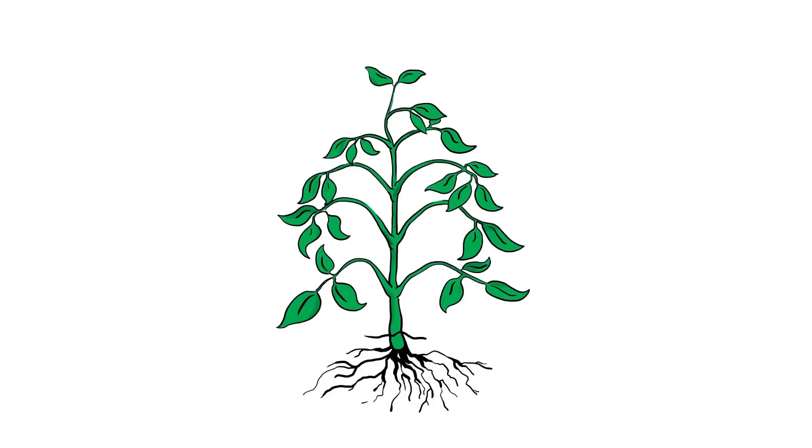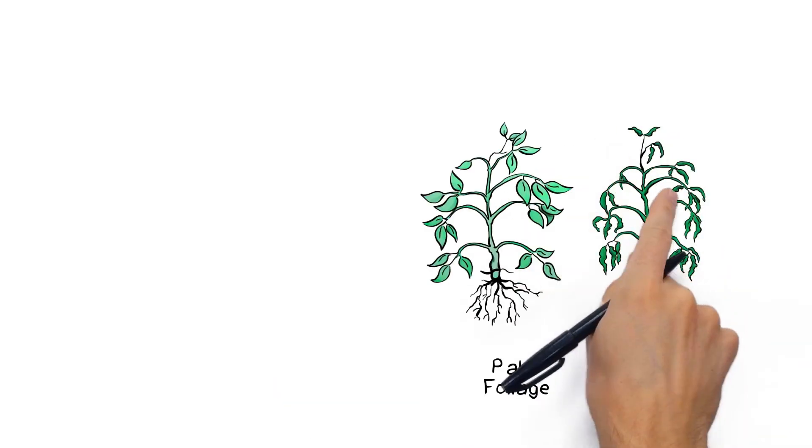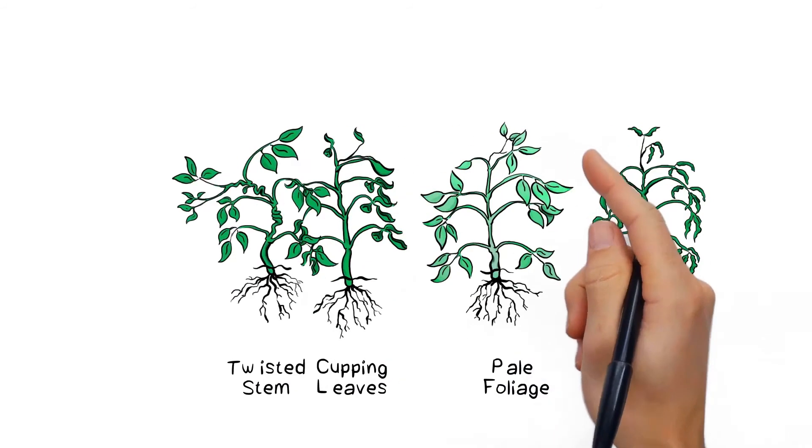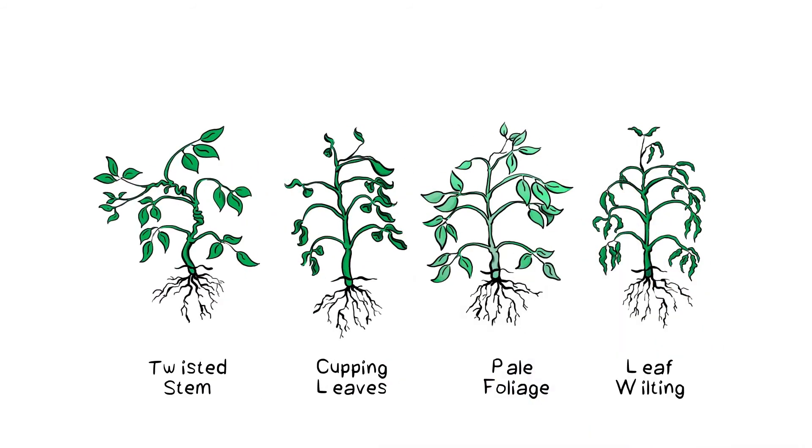That's what's happening at the cellular level, but what does it look like in the field? A variety of symptoms such as wilting, pale foliage, cupping of leaves, twisted stems, and other odd growth patterns could be seen as the plants try to ensure their survival.